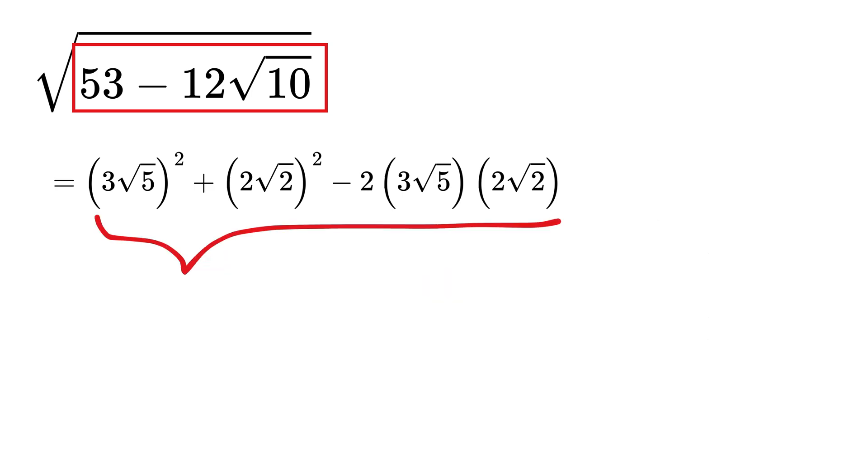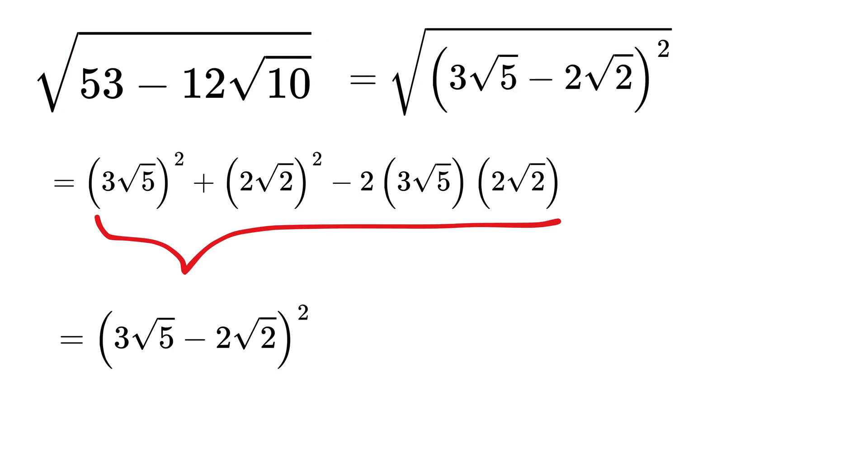So this entire expression becomes 3 root 5 minus 2 root 2 whole squared. Since the entire expression is already under a square root, the square and the square root cancel each other out.